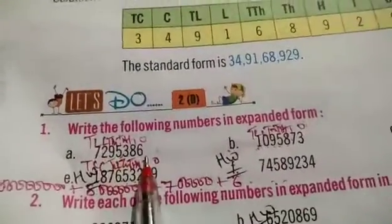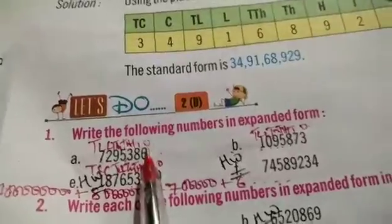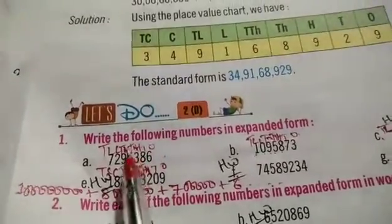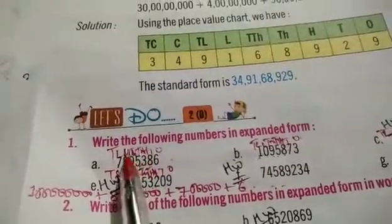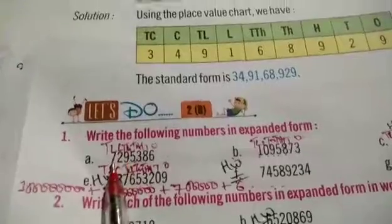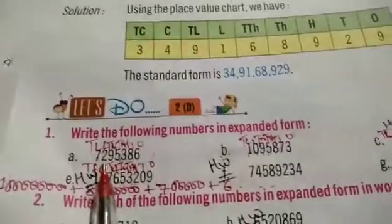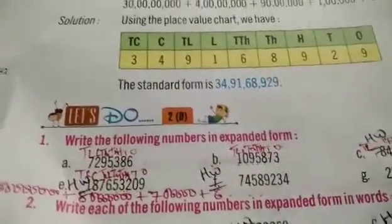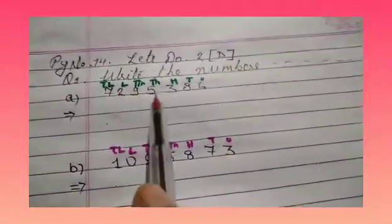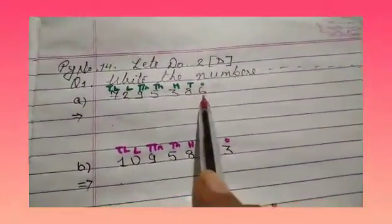We have written the numbers with expanded form: 1, 10, 100, 1000, 10,000, 1 lakh, and 10 lakhs. Come on children, copy down the first part in your classwork copy. The first part is 7295386.